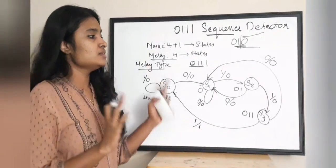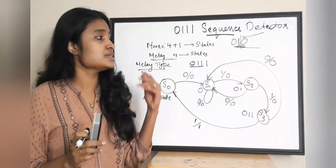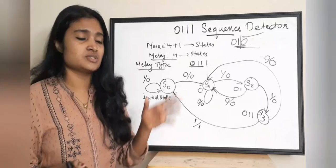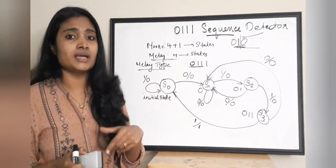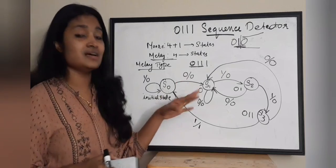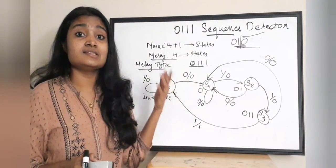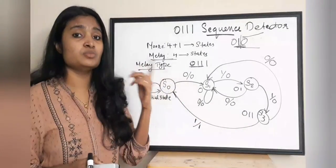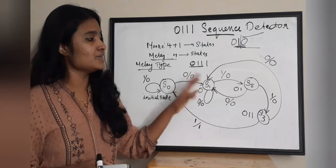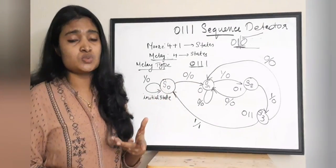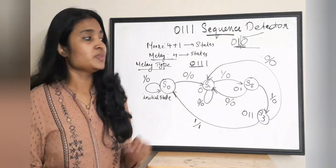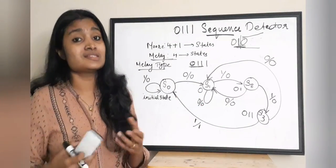We have discussed both cases: how to draw a Moore type FSM and a Mealy type FSM for the same sequence. The main difference is that Moore type has 5 states while Mealy type has 4 states. In Moore type, each state is associated with an output and S4 gives output 1. In Mealy type, the output is written as input/output on transitions — you identify which inputs give you the output.